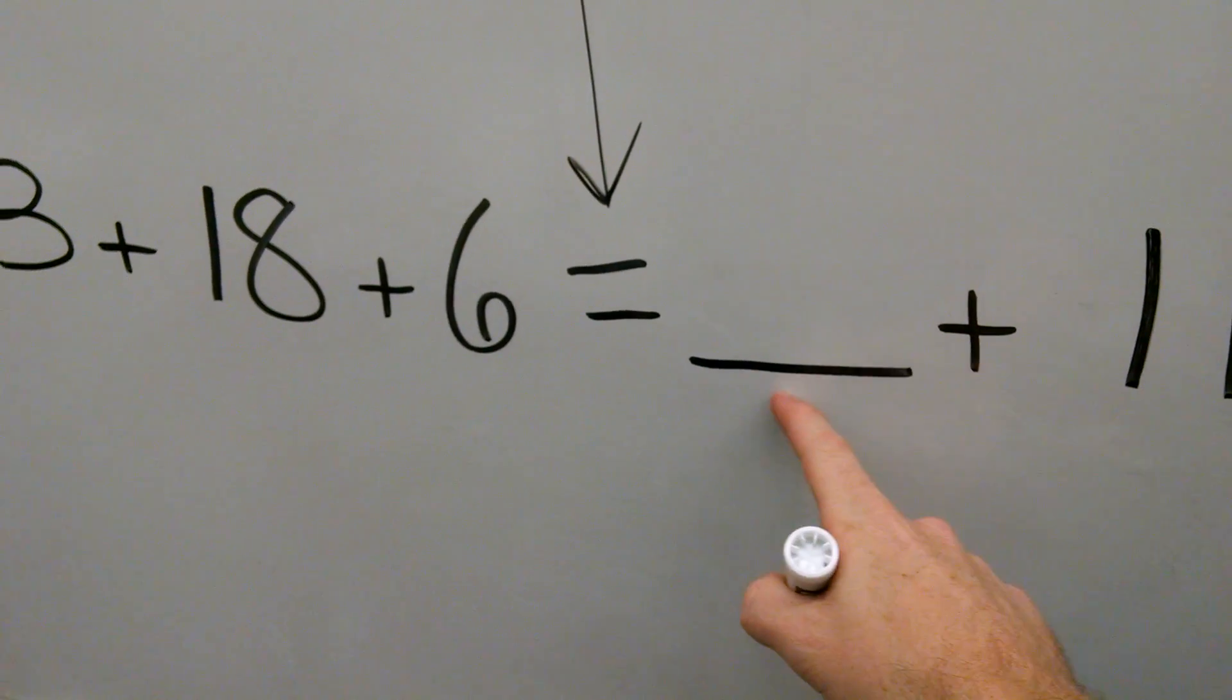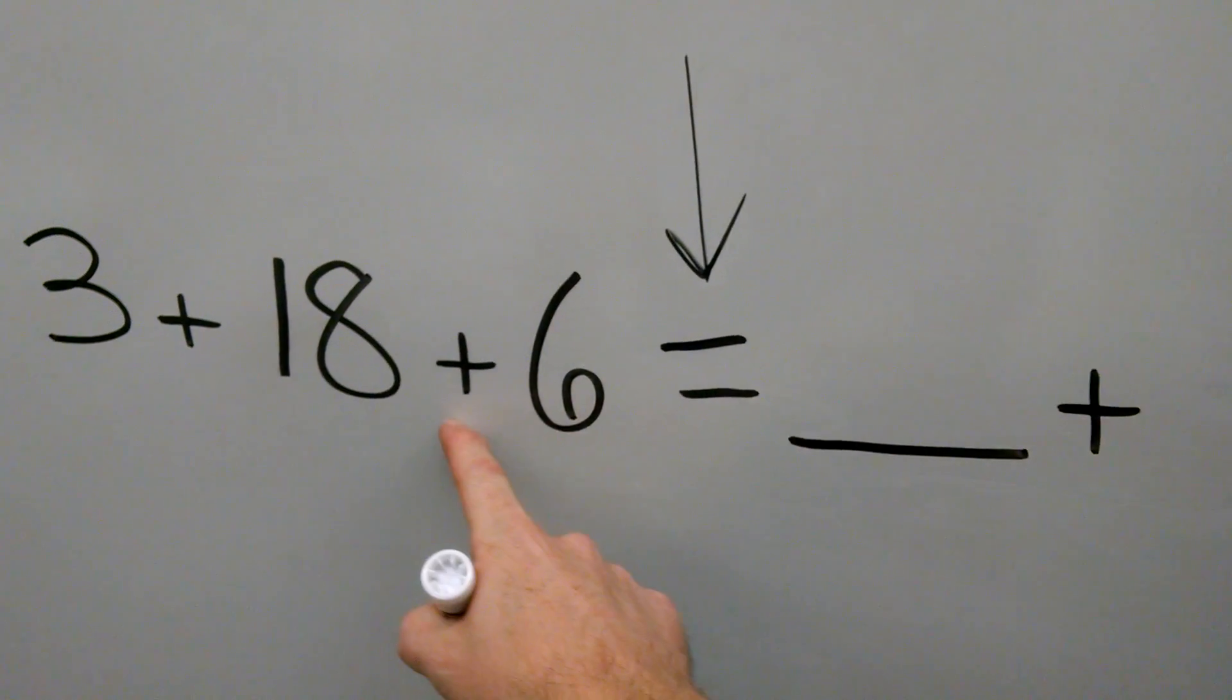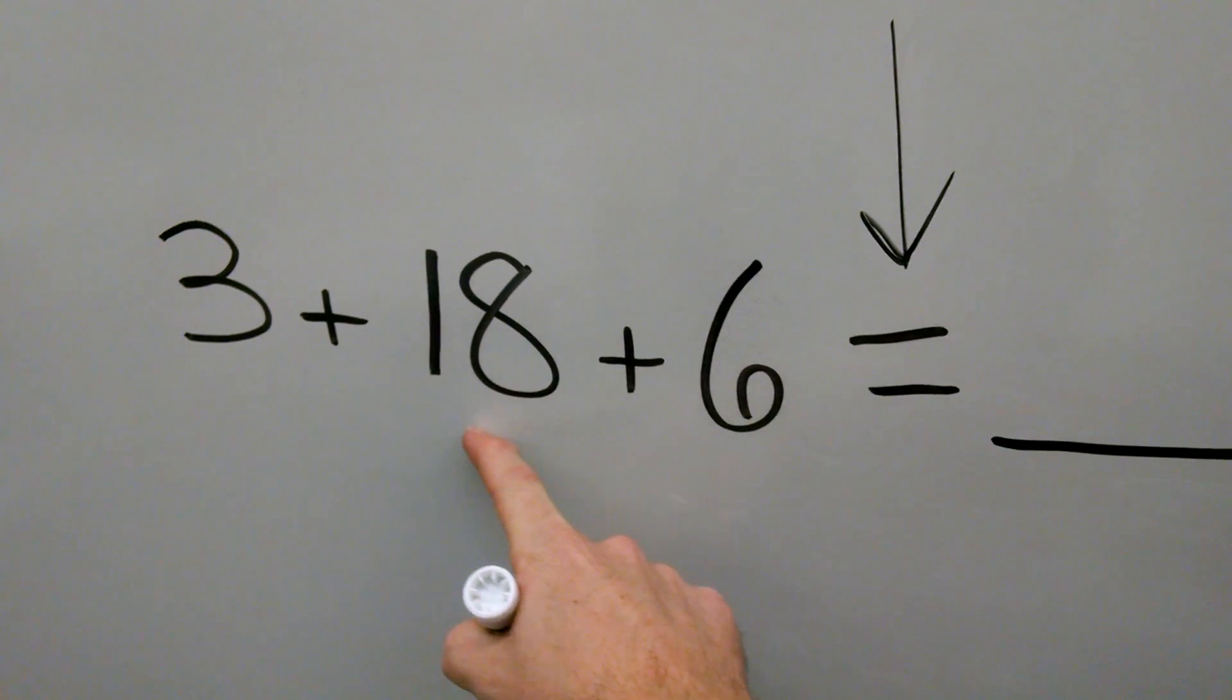What we have is blank plus 11, and on this side we have 3 plus 18 plus 6.